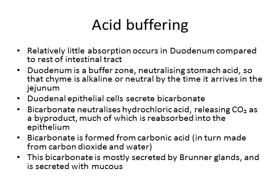It does this by secreting bicarbonate, secreted by duodenal epithelial cells. These bicarbonate ions react with hydrochloric acid to make water, salt, and CO2 as byproducts. Most of the water, salt, and CO2 are reabsorbed and recycled to make more bicarbonate, since bicarbonate is made from a reaction of CO2 and water — CO2 and water make carbonic acid, and removing a hydrogen ion from carbonic acid gives you bicarbonate. This bicarbonate is mostly secreted by Brunner's glands, often alongside mucus, creating an alkaline mucus lining of the intestinal wall.